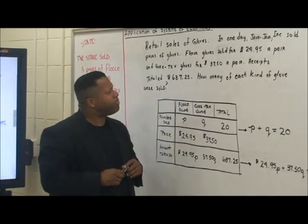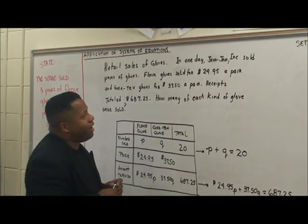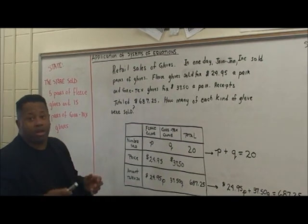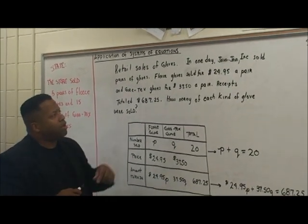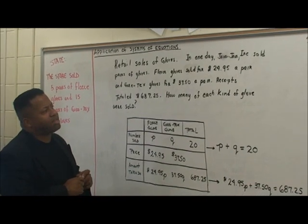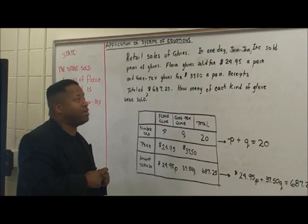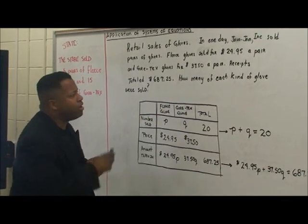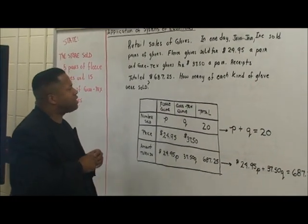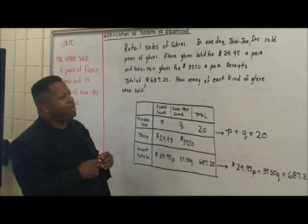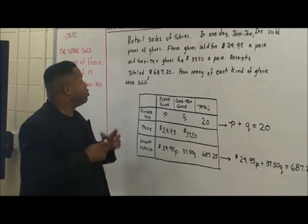Let's look at a problem. One day Java Java Incorporated sold pairs of gloves. Fleece gloves sold for $24.95 a pair and Gore-Tex gloves sold for $37.50 a pair. Receipts total $687.25. How many of each kind of glove was sold?